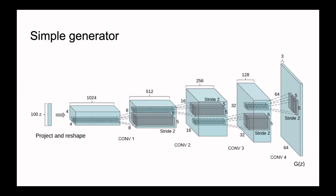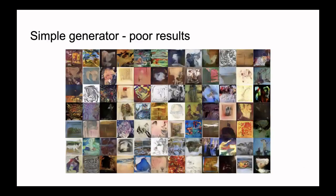Before StyleGAN, the generator always looked something like this: it takes a latent variable z — just 100 random numbers — at the beginning, passes it through the network, and the image size increases after each layer, ending at a 64×64 pixel image. The results usually weren't very good — this is how it looks if you train it on paintings.